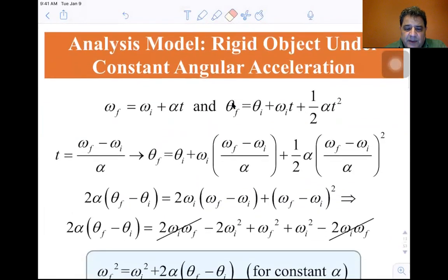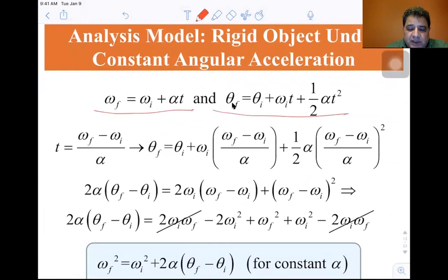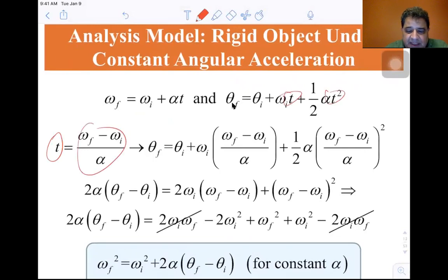Now, given these two equations, we solve for t from the first equation: t = (ω_final − ω_initial) / α. We are going to substitute this t into the second equation — into these two places where t appears.